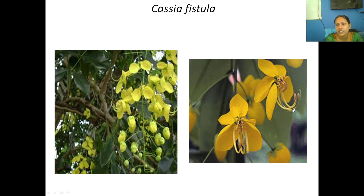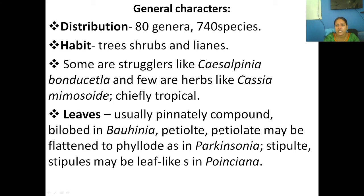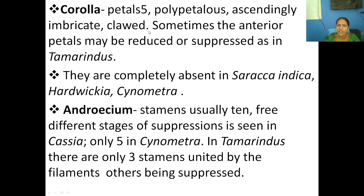Caesalpinioideae has 80 genera and 740 species. Trees, shrubs, and lianas are seen; some are herbs also. An important point about the leaves: they are pinnately compound. In Bauhinia it is a bilobed structure. The inflorescence is spike or corymb type; flowers are bisexual, perigynous, dichlamydous, and zygomorphic. The calyx is 5, polypetalous with imbricate aestivation. The corolla is also polypetalous with 5 petals and ascendingly imbricate aestivation. Remember: in Papilionoideae it is descendingly imbricate, whereas in Caesalpinioideae it is ascendingly imbricate.